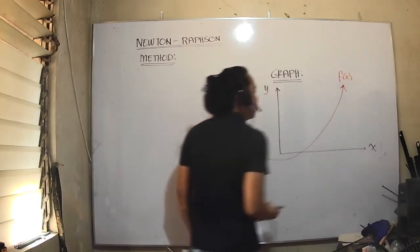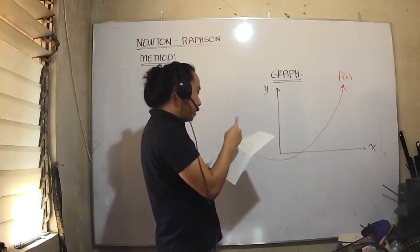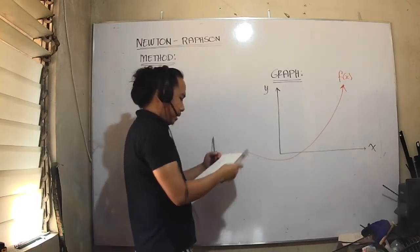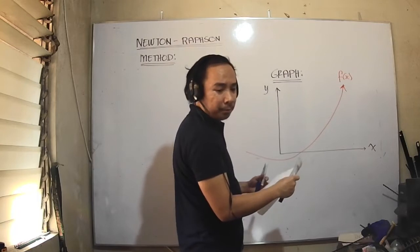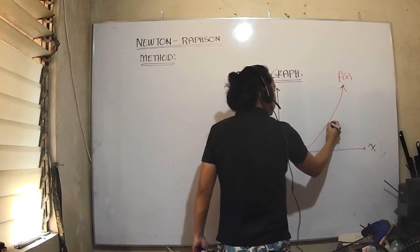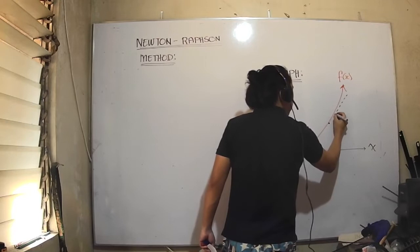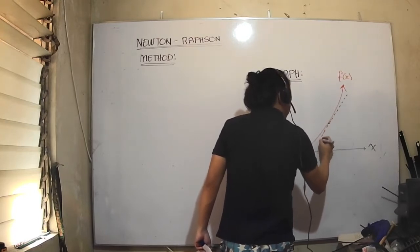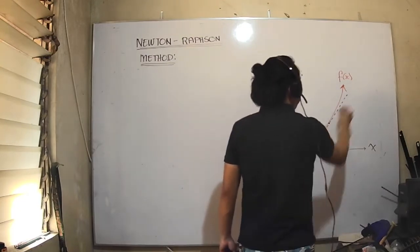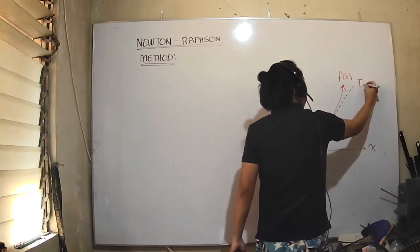Then we have a tangent line to the curve. This is a tangent line to the curve at this particular point, an arbitrary point. You can recall from differential calculus, this is our tangent line.